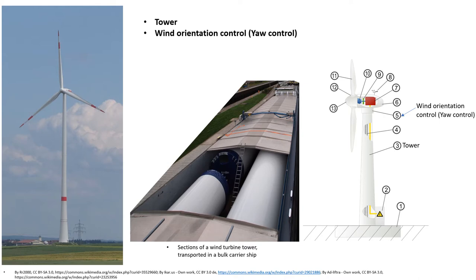S355 and S500 are the standard structural steels usually employed in making tower material. S500 requires 30 percent less material because of its improved strength. Therefore, replacing wind turbine towers with S500 steel would result in a net saving both in weight and cost. However, a disadvantage of conical steel towers is that constructing towers taller than 90 meters proves challenging.